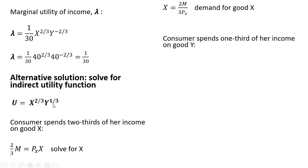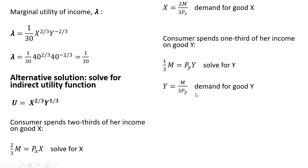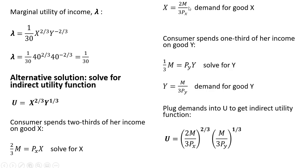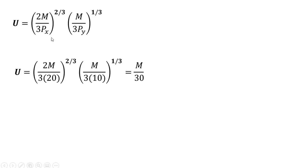We can do a similar thing for good Y. The consumer spends one-third of their income on good Y, so one-third of m equals the total spending on Y, which is the price of Y times units of Y. Solving for good Y gives us the consumer's demand for good Y. We're going to plug both demand equations into the utility function — where we have X, we substitute 2m divided by 3Px, and where we have Y, we substitute m divided by 3Py. Making those substitutions gives us the indirect utility function. Evaluating when the price of good X is 20 and the price of good Y is 10, we get m over 30.